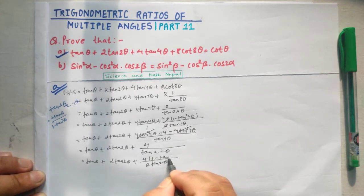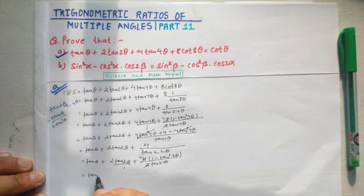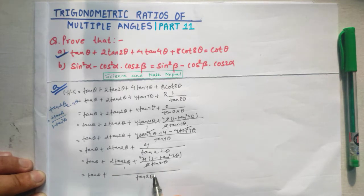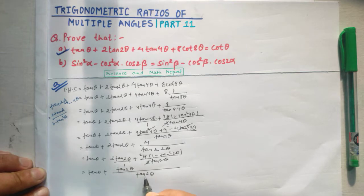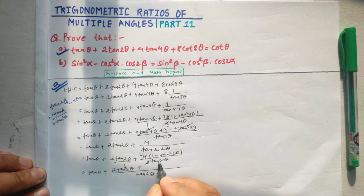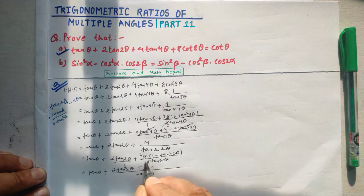We now apply the same process to the remaining terms. Using tan 2θ equals 2 tan θ divided by 1 minus tan² θ, we get 2 divided by tan 2θ equals 1 minus tan² θ divided by tan θ. Expanding: tan 2θ times 2 tan θ gives 2 tan² 2θ, and combining with remaining terms, we simplify step by step, cancelling matching terms.